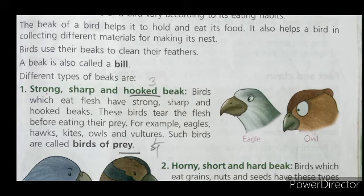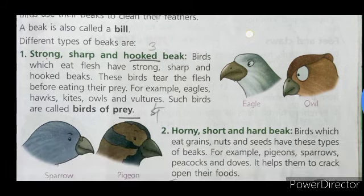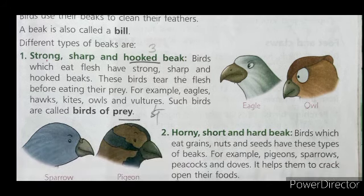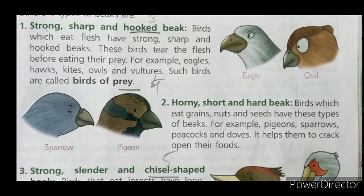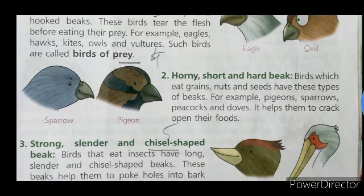So children, we have completed the first kind of beak — the strong, sharp, and hooked beak. In our next class we will discuss the second kind of beak, which is the horny, short, and hard beak, and also many more types of beaks. Hope you all understood. Thank you.